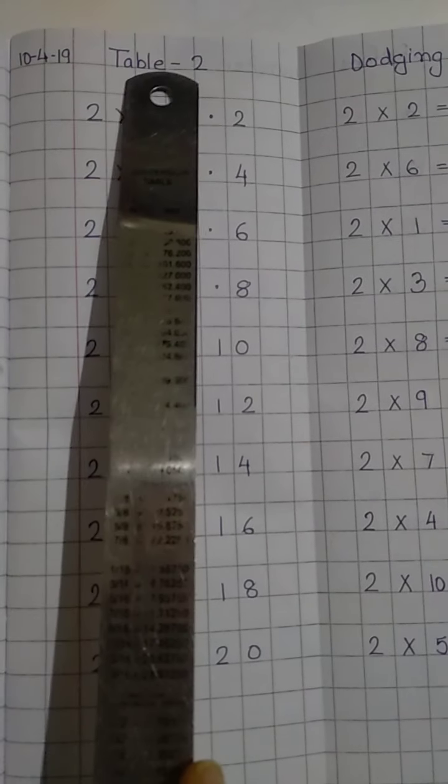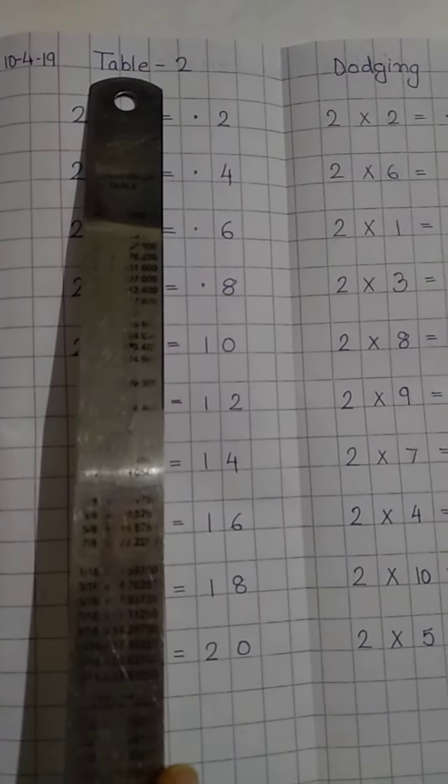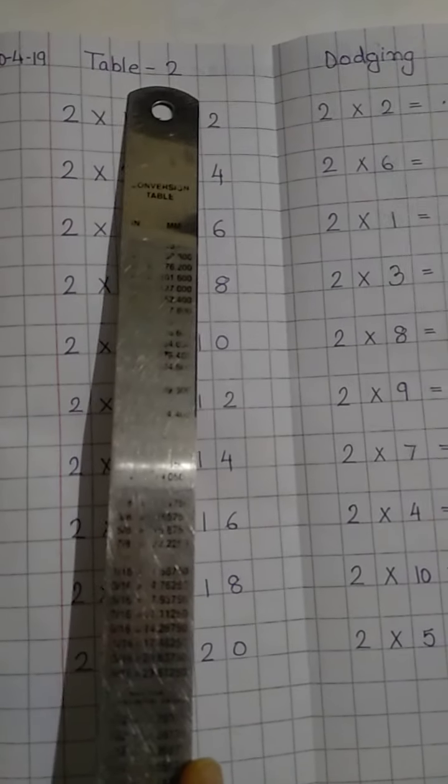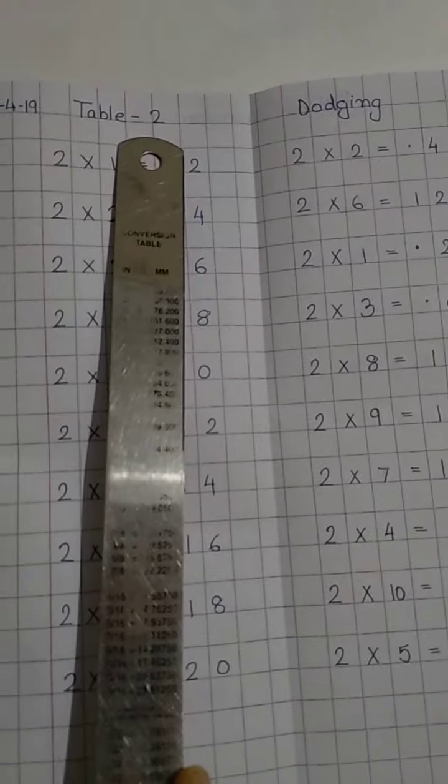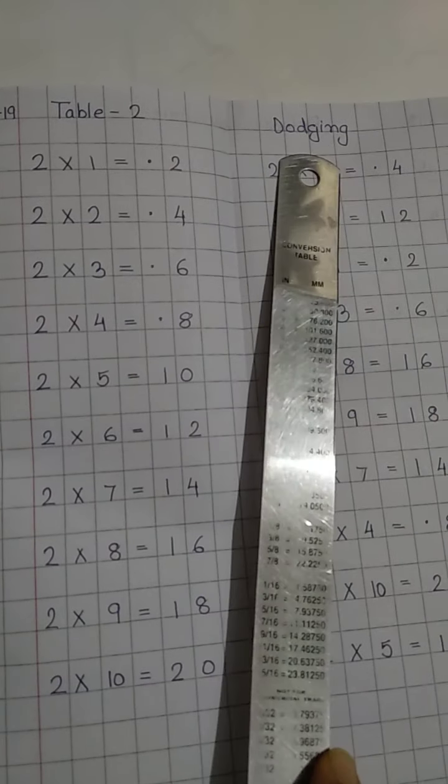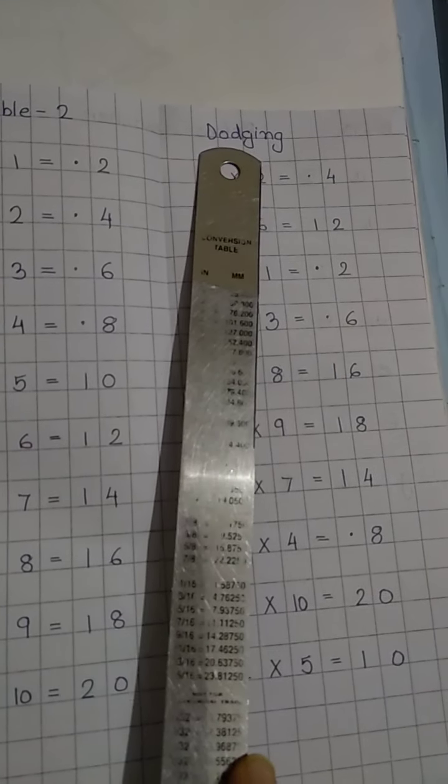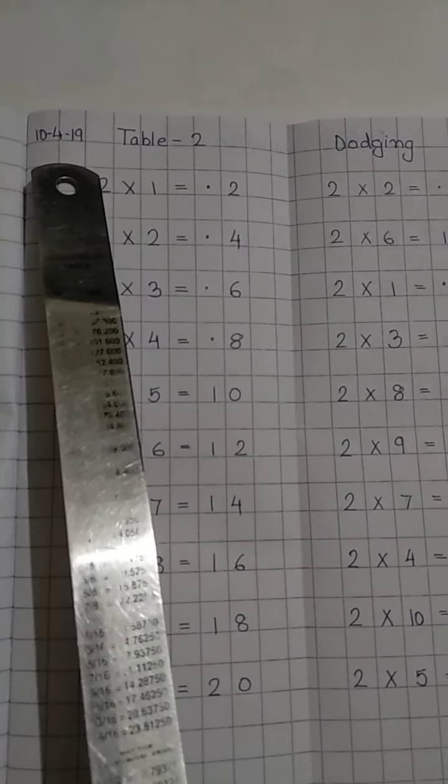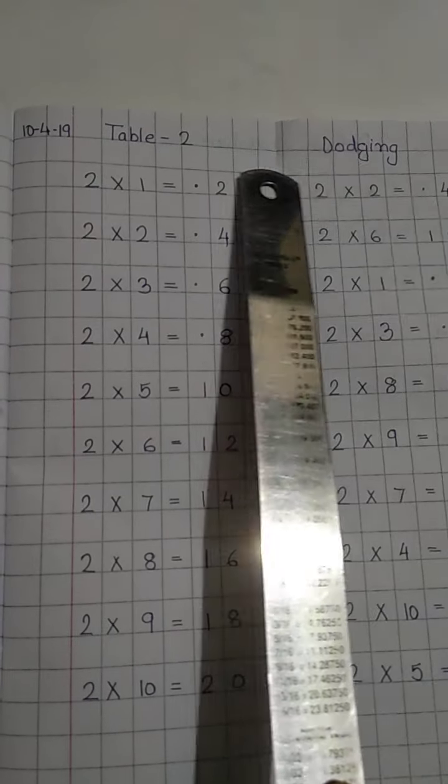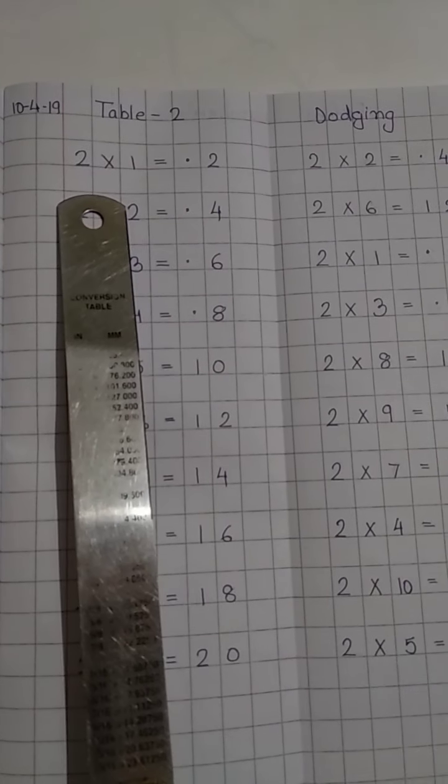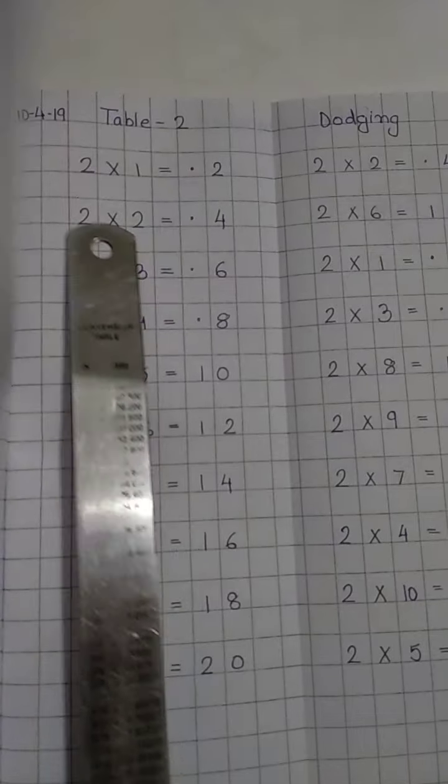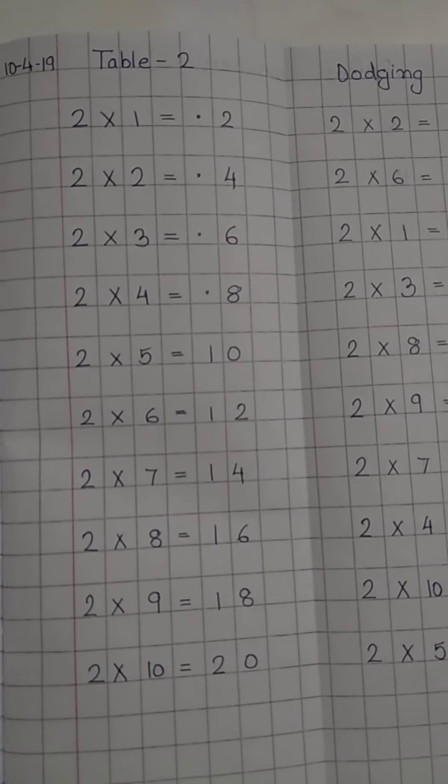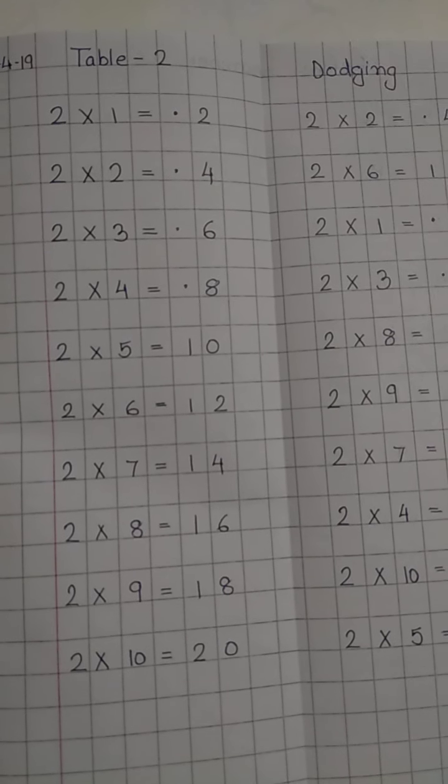Then you are going to write table. You can either write table OF 2 or write it this way also. Then on the other side of the page, write the heading dodging table. Then you have to leave one whole line before you start to write the table of 2. See how neatly I have written, and I hope that you all will write the table in this same way.